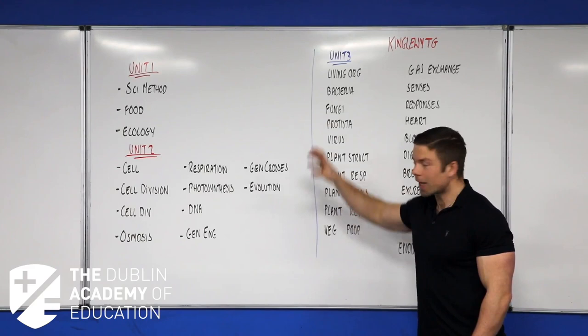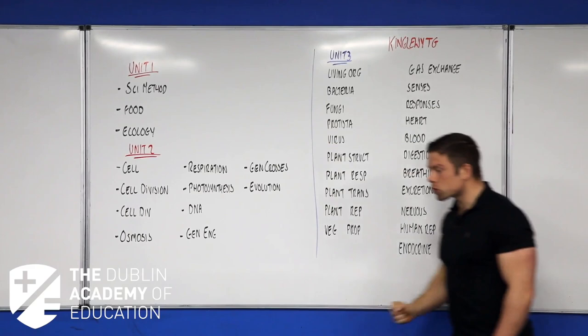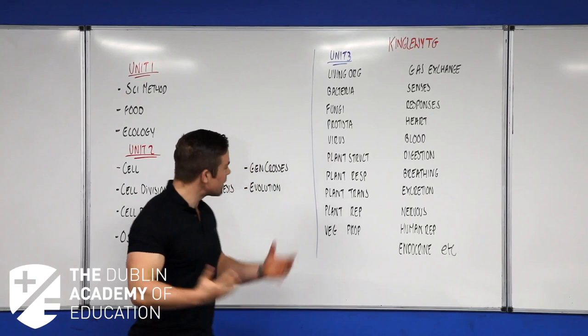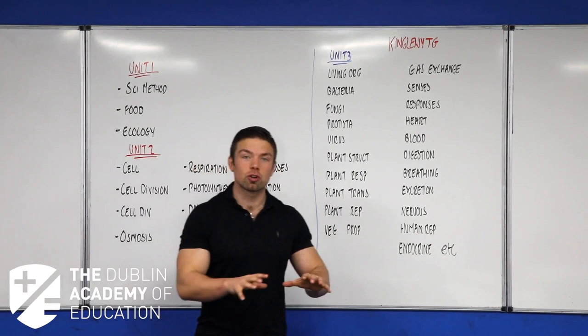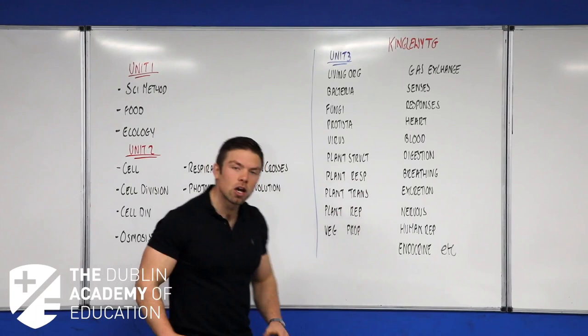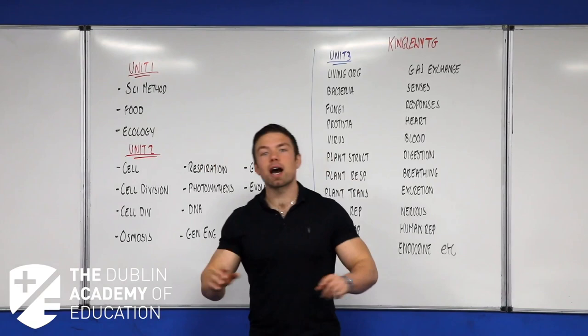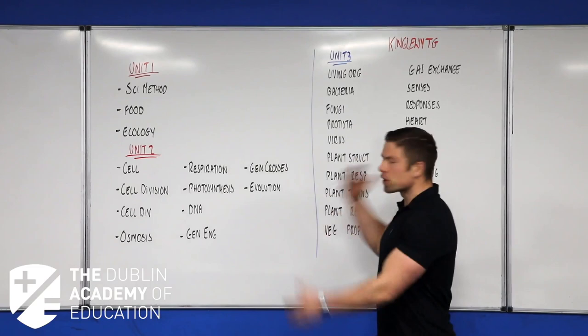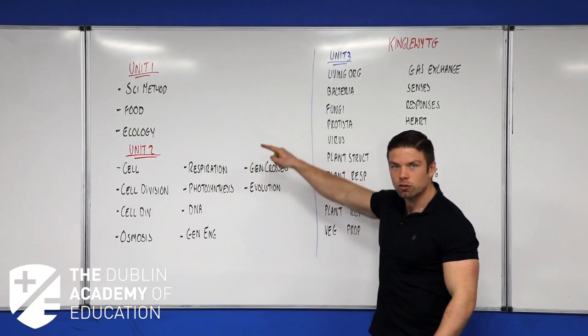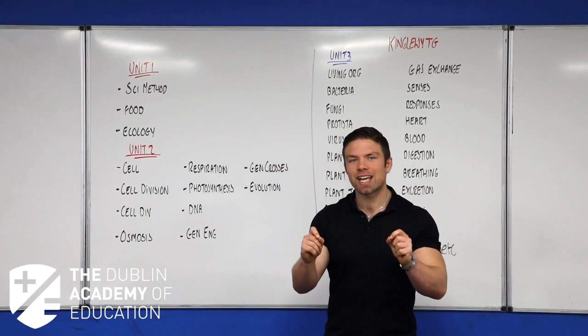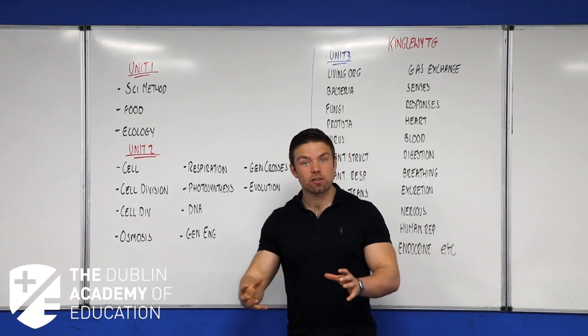We've got Unit 1 and Unit 2 in red, and over here we've got Unit 3. You can see straight away that Unit 3 is way longer — there are way more topics, including things like human reproduction and plant reproduction, potentially tricky stuff. But we're casting away half of that because that's actually going to be Course B. This here is Course A, and Course A alone is worth 80% of your grade.